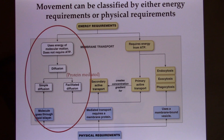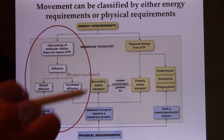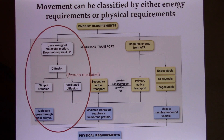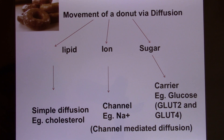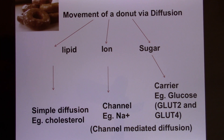Let's keep going. Before the break we talked about diffusion — passive transport, the one that does not require ATP. Let's look at one example. This diffusion happens a lot in your digestive system.